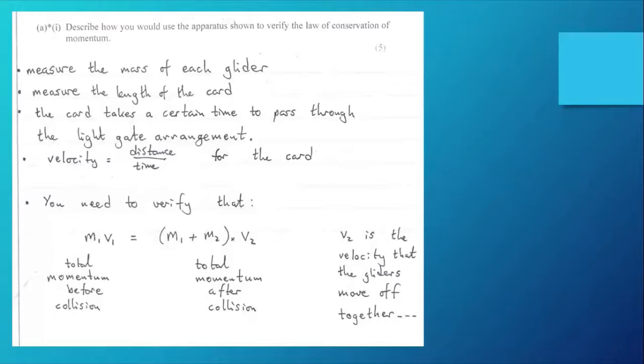What do we need to do? We need to measure the mass of each glider on an electronic balance in the lab. Measure the length of the card. The card takes a certain time to pass through the light gate, and for the card, velocity equals distance over time. From that we can work out the velocity. Well, actually the computer will give us that, but that's the reasoning behind that.